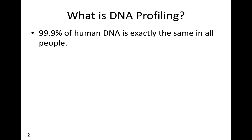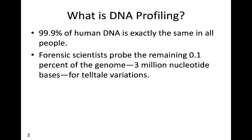First of all, almost all of our DNA is exactly the same — you, me, your mom, your dad, every other person — 99.9% of it is exactly the same. That means in forensic science, when we're looking at whether DNA matches from one person to another, we're not actually looking at all of their DNA. We're going to be looking at the 0.1% of the human genome, which equates to about 3 million nucleotide bases, to find variations.